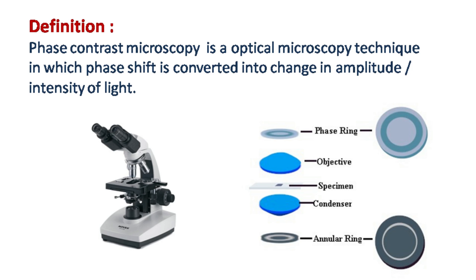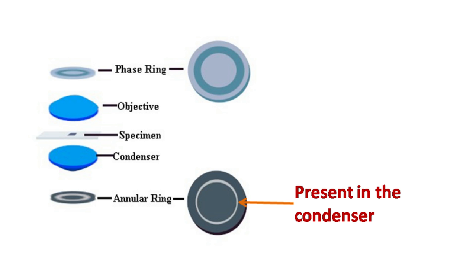Let's see how phase contrast microscope works. The phase contrast microscope has two components: annular diaphragm and the phase shifting ring. The annular diaphragm is a ring-like slit present in the condenser, while the phase shift ring is present in the objective.